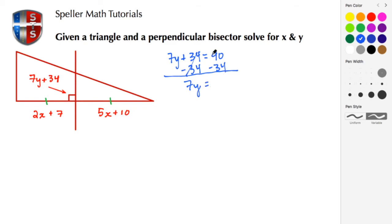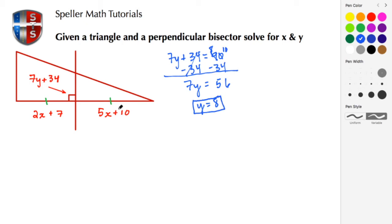In doing so, we eliminate the 34 on the left and we're left with 7Y. On the right, we do the subtraction: 90 minus 34 — regrouping, 10 minus 4 gives us 6, and 8 minus 3 gives us 5 — so 7Y equals 56. To isolate Y, we divide both sides by 7, and we see that Y turns out to be 8.